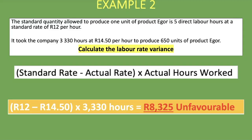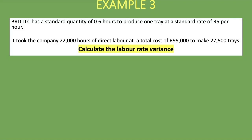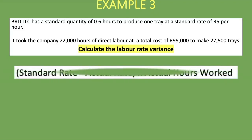Here is our third example — pause and attempt it before continuing. BRD LLC has a standard quantity of 0.6 hours to produce one tray at a standard rate of 5 rand per hour. The company used 22,000 hours of direct labor at a total cost of 99,000 rand to make 27,500 trays. The standard rate is 5 rand per hour.